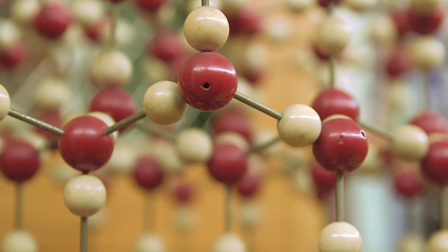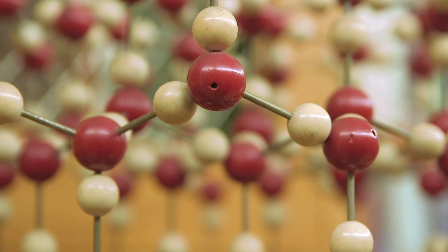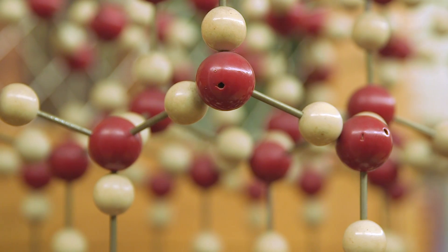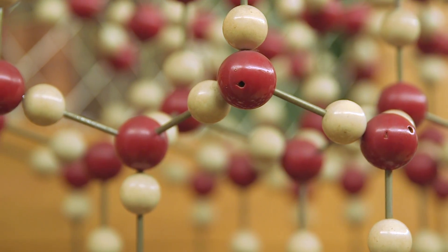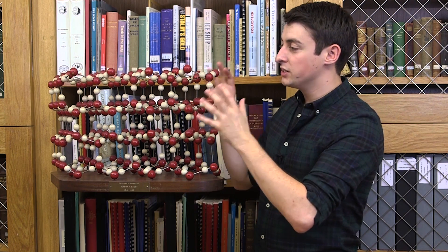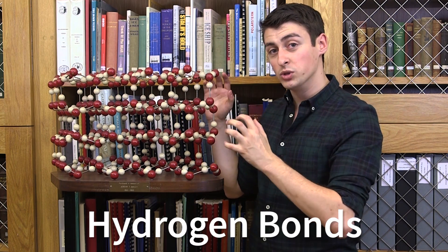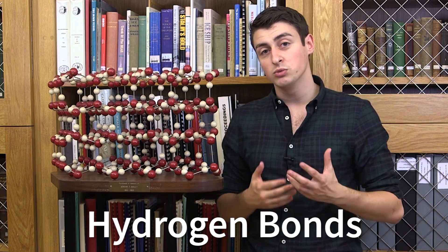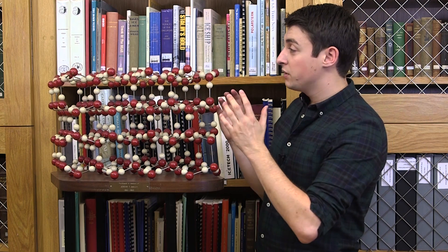The fact that ice is less dense than water is actually one of the most remarkable properties about it. As we can see in this model, this is a model of the molecular structure of ice. At each vertex we have a water molecule—red being an oxygen atom and white being a hydrogen atom, so we have H2O. And between them we have these metal bars. These represent hydrogen bonds between the water molecules. Hydrogen bonds are just one way in which molecules can talk to each other.